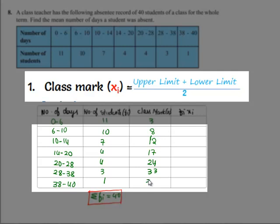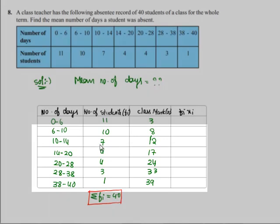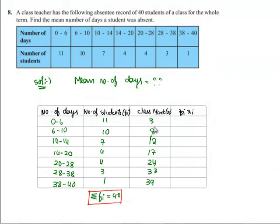As we got fi and xi, we shall find the product fi into xi. That is 11 into 3, it's 33; 10 into 8, it's 80; and similarly we get 84, 68, 96, 99, and 39.